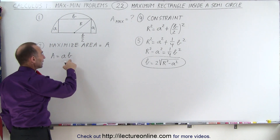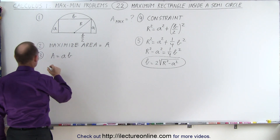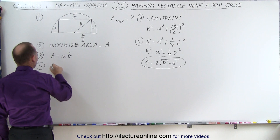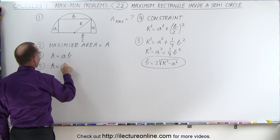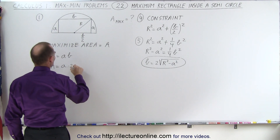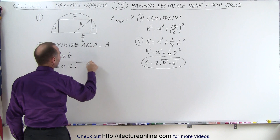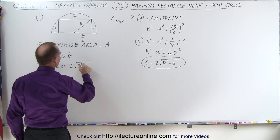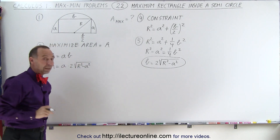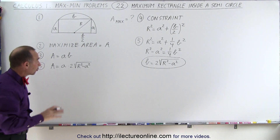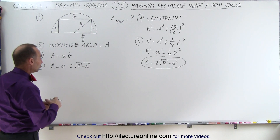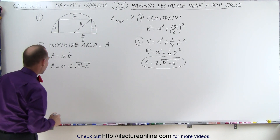I can plug that in to get the area equation. So now the area A equals A times 2 times the square root of R squared minus A squared. Now I'm ready to take the derivative of that and set it equal to zero in order to solve for A.